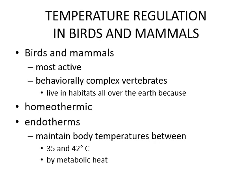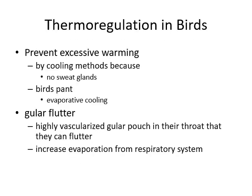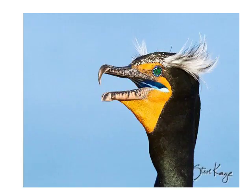Temperature regulation in birds and mammals: birds and mammals are the most active and behaviorally complex vertebrates, living in all habitats on Earth. Because they are homeothermic and endothermic, they maintain their body temperature between 35 and 42 degrees through metabolic heat. In thermoregulation, birds prevent excessive warming by cooling methods. Since they don't have sweat glands, birds pant — evaporative cooling takes place through the tongue. They also have a gular flutter: a highly vascularized gular pouch in the throat that can flutter to increase evaporation from the respiratory system.